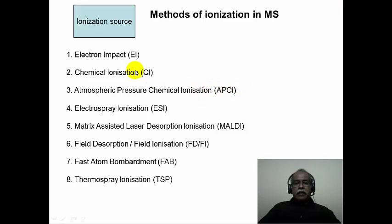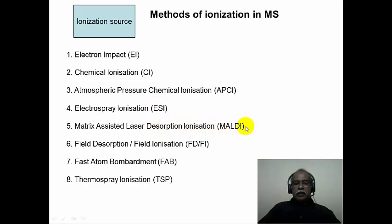Chemical ionization can be done under vacuum or under atmospheric pressure; when done under atmospheric pressure, it is called APCI — atmospheric pressure chemical ionization. Electrospray ionization (ESI) and matrix-assisted laser desorption ionization (MALDI) are new techniques very recently discovered, which we will deal with in detail in a later module, because they are extremely important in modern mass spectrometry.